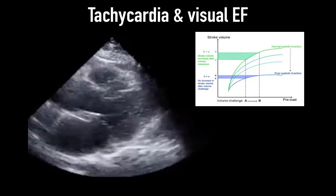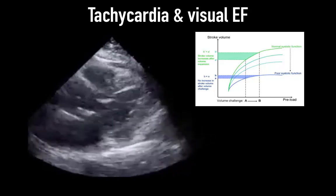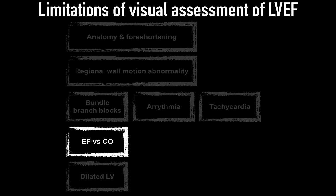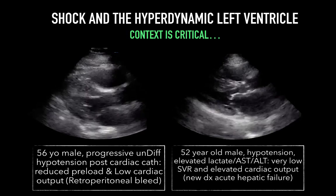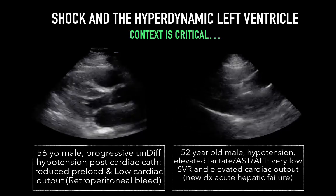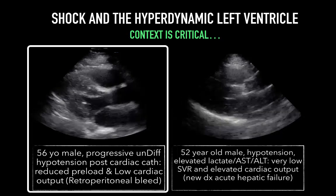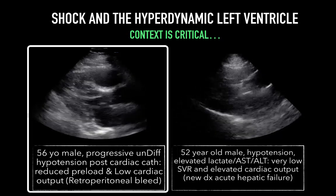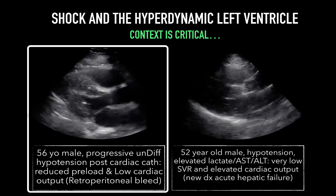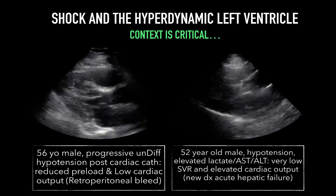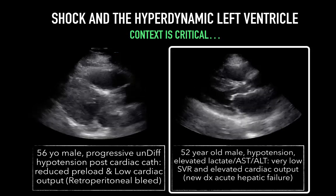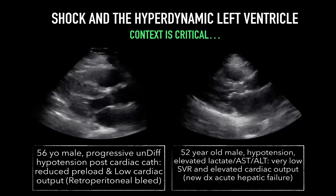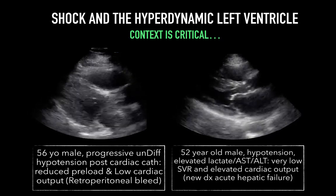We'll now discuss the paradox of EF versus cardiac output. The key message is that ejection fraction does not equal cardiac output — context is critical. These are two cases of high EF: on the left, cardiac output is very low due to poor preload, with the ventricle squeezing every drop it can into the aorta. On the right, preload and cardiac output are excellent, and extremely low systemic vascular resistance leads to easy LV ejection. In both cases the LVEF is excellent, but cardiac output and afterload are widely different.